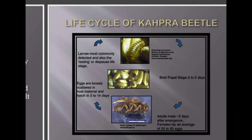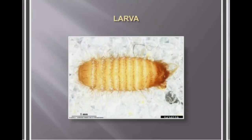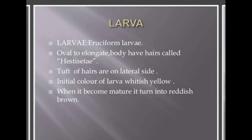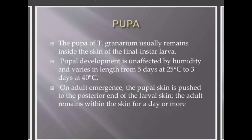The life cycle consists of egg, larva, pupa, and adult. The adult lays 50 to 90 eggs and the eggs are further hatched into larva, which is then converted into pupa. This is a picture of the larva. The larva is eruciform, oval to elongate in body shape, and has hairs known as hastisetae. Tufts of hair are present on the lateral side. The initial color of the larva is whitish yellow.